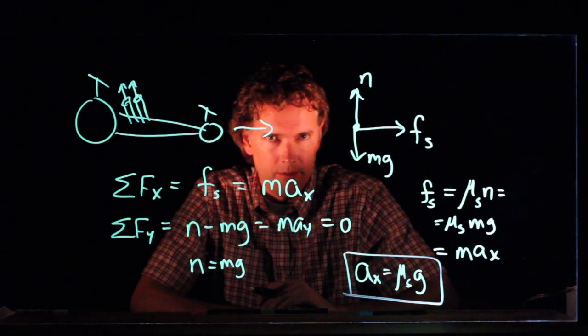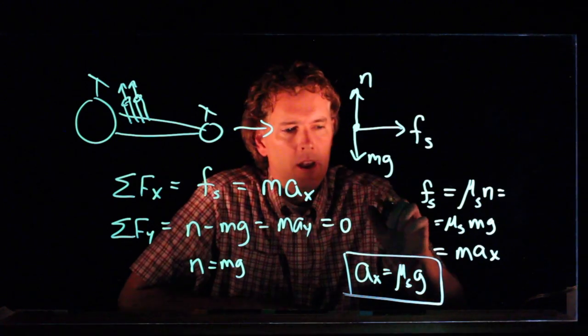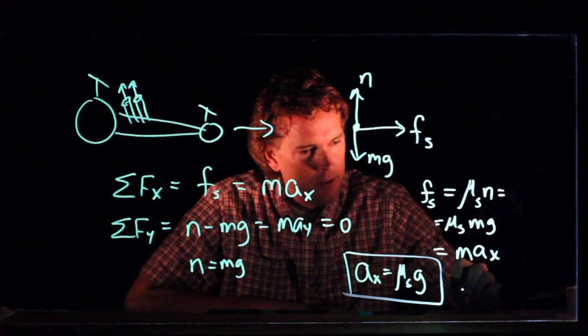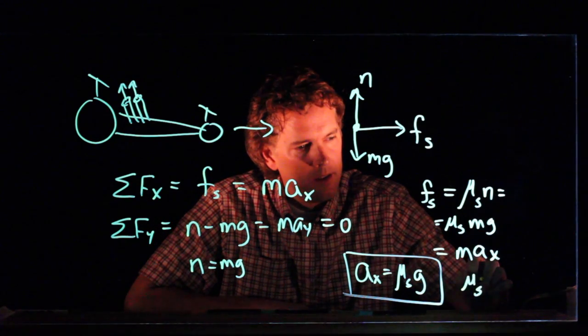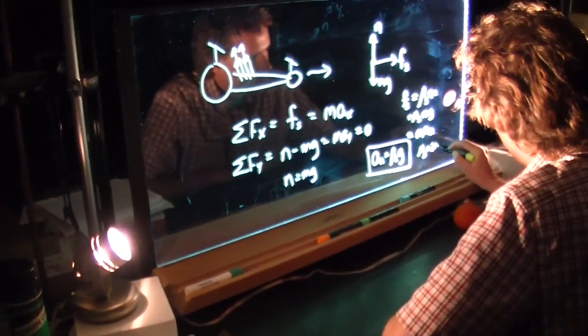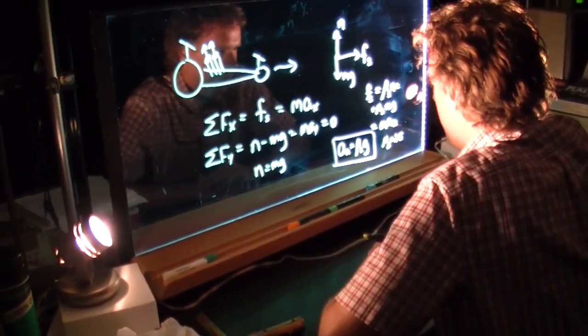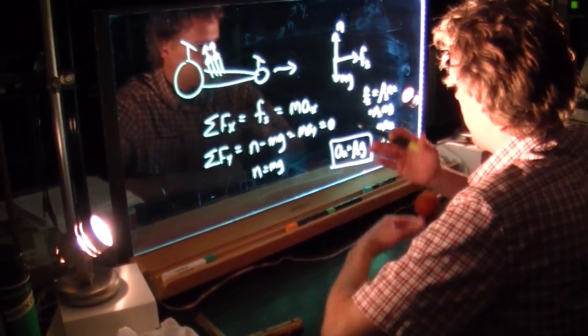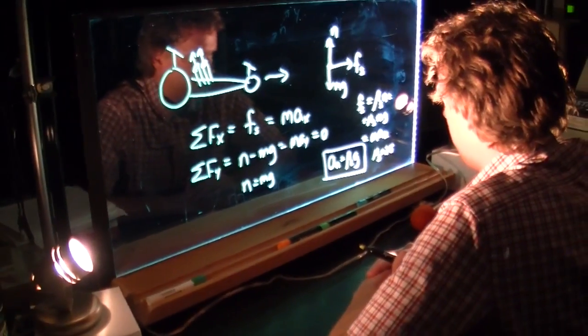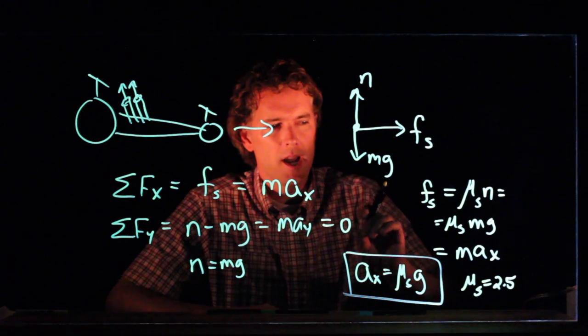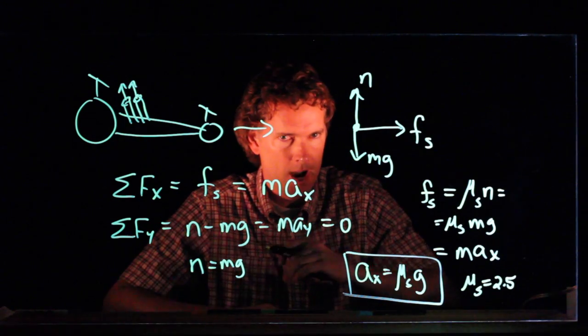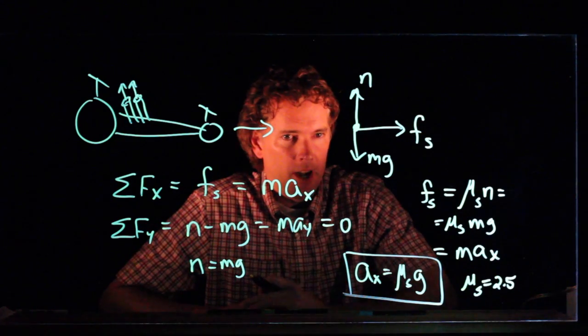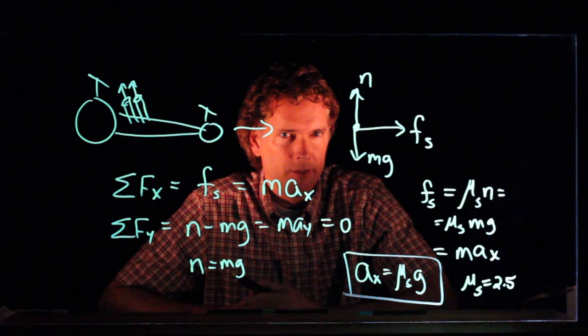At the track, however, at the drag race track, they are able to get mu s significantly higher than that. They get a mu s of about 2.5. How do they get a mu s of 2.5? Well, they heat the track, they burn rubber on the track, and in between races, they even spray glue onto the track to get those tires to stick. So that's pretty fast. You can accelerate at 2.5 g. But there's a problem.